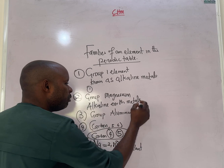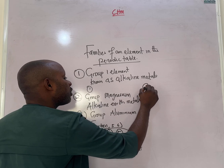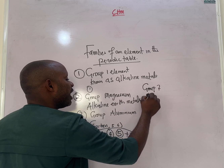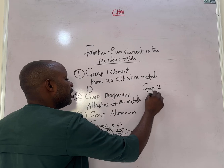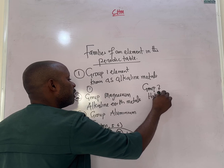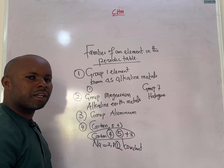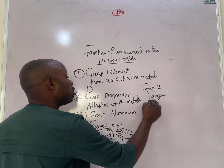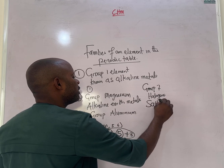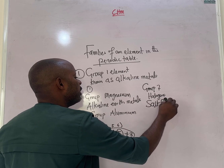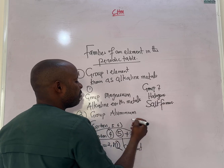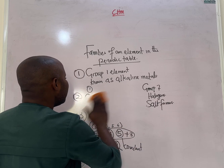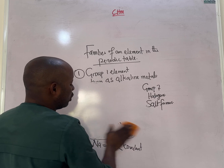Group seven elements are known as the halogens because they are considered salt formers. They need only one electron to complete their octet structure.